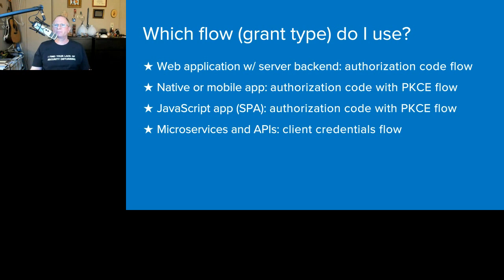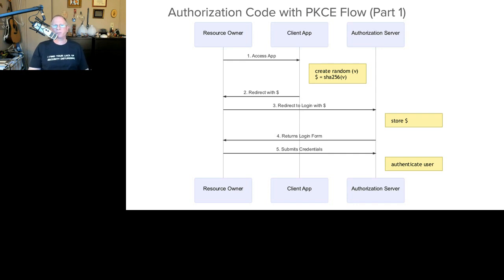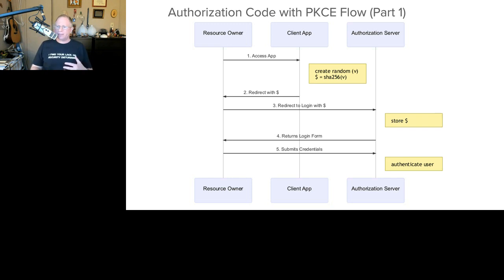Let's talk about PKCE — Proof Key for Code Exchange — a way to use the authorization code flow in an unsafe environment. In the regular authorization code flow, exchanging the code for a token relies on a fixed client secret. In the world of SPA or mobile apps, it's not safe to store a fixed client secret because those can be analyzed, decompiled, parsed, and extracted. What PKCE does is allow a dynamic secret that's safe from prying eyes, used only once per flow, and gives the authorization server a way to validate it.